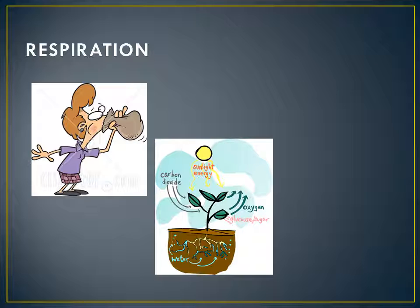What living organisms do is take in oxygen, which comes from plants, and give out carbon dioxide, which is used by plants. The process of taking oxygen into cells, using it for release of energy, and then eliminating the waste products like carbon dioxide and water is known as respiration. Respiration is a slow process, and there are various enzymes which help in it. Respiration is similar to combustion or burning, with a few differences we will learn later.